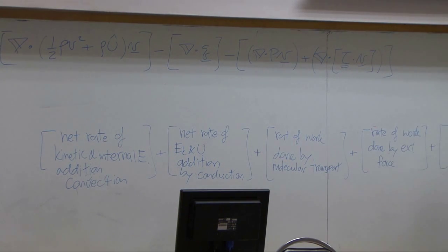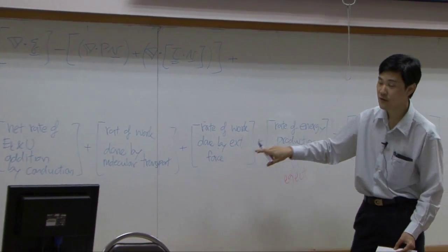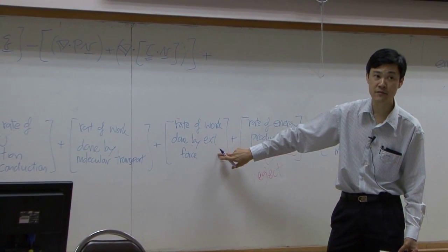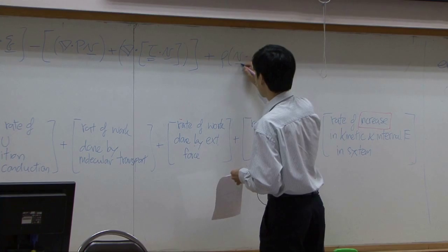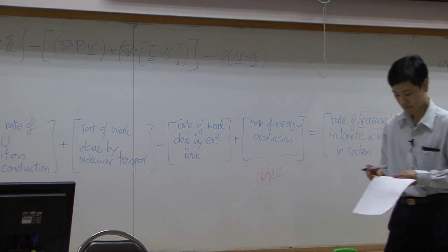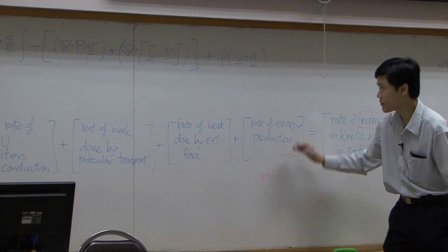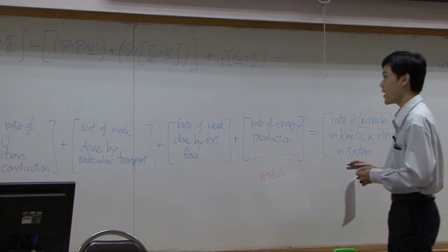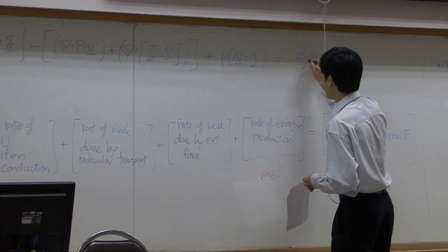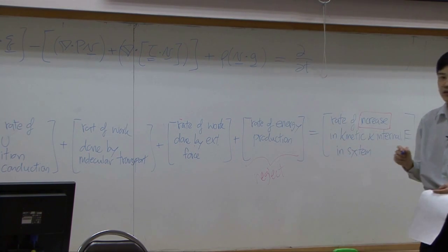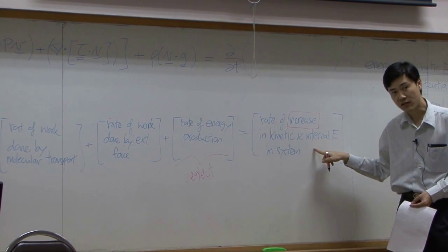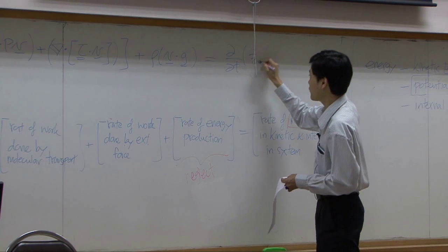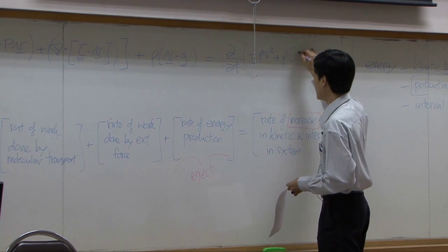Tau dot v — that's work done by molecular transport. Then external force. If you think external force is basically gravity force, work done by gravity force can be calculated from this term. If we neglect this term, then we have the rate of increase or accumulation term. The accumulation term is the change in energy with respect to time, where the energy inside is kinetic energy (1/2 rho v squared) and internal energy (rho u).